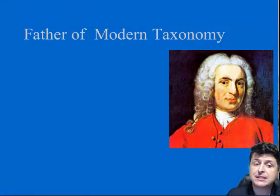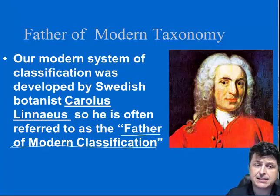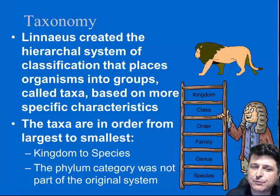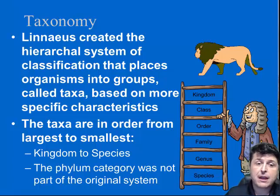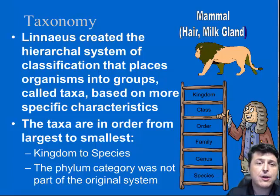To fix that, a gentleman named Carolus Linnaeus came along — Linnaeus is our father of modern classification. He created a hierarchical system of classification that put things into groups based upon specific characteristics, not on some randomly inferred complexity. Things were grouped in order from least specific to most specific. You'll notice that the phylum group is not present in his initial setup — that was added later after his death. Now we could identify organisms based upon specific characteristics.